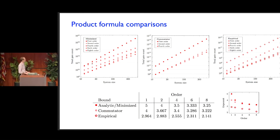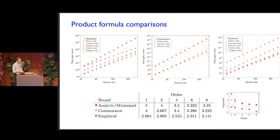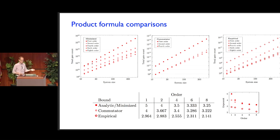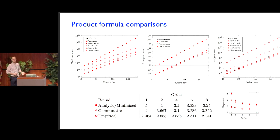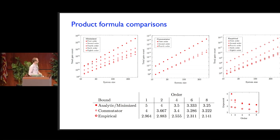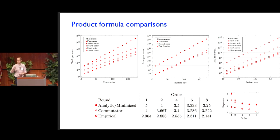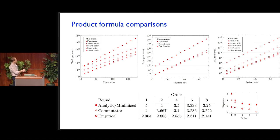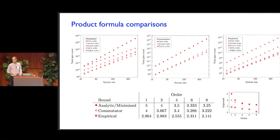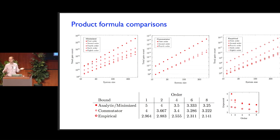We also understand something about the asymptotic performance of these product formula approximations. For one-dimensional systems evolving for constant time, we might expect we should be able to do that with a linear number of gates, and it seems like the best we know how to do is n-squared. Scaling things up for linear time evolution, what we know how to do is cubic, and what we might expect would be quadratic. If we look at the provable bounds, they sort of are always above cubic. But if you look at the empirical performance of the product formulas, it actually looks like it's getting close to quadratic. So maybe the true performance of the product formula approach can give you something quadratic — but we would need to prove better bounds in order to actually confirm that. Maybe in some sense we already know the algorithm; we just don't know how to set the parameters.